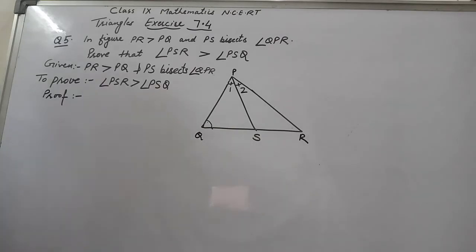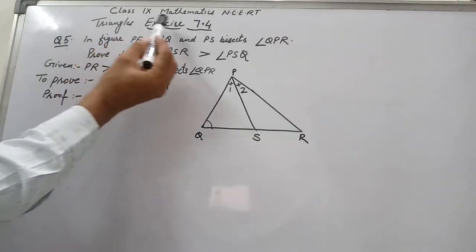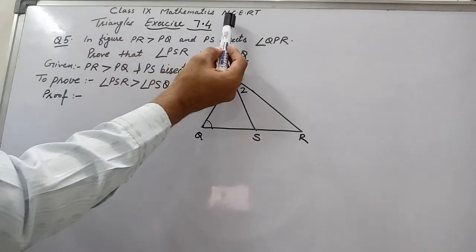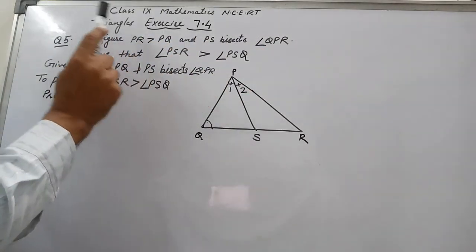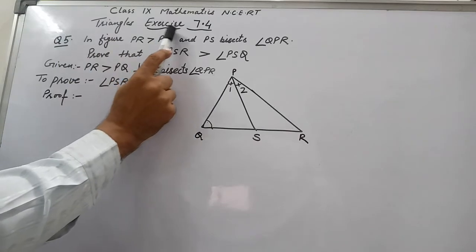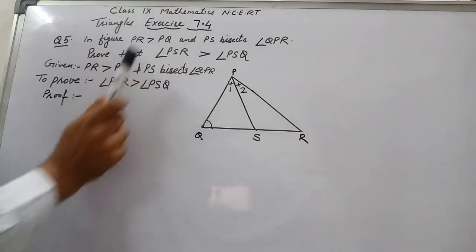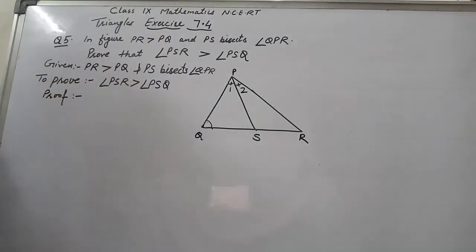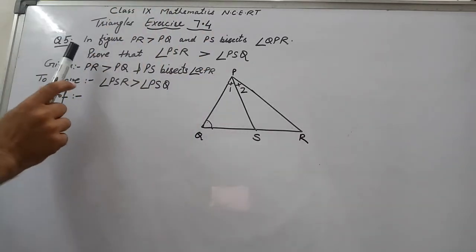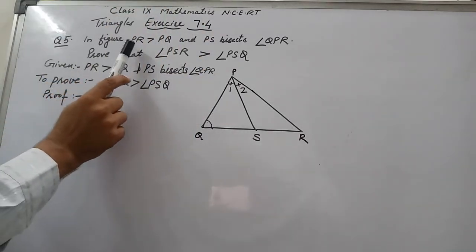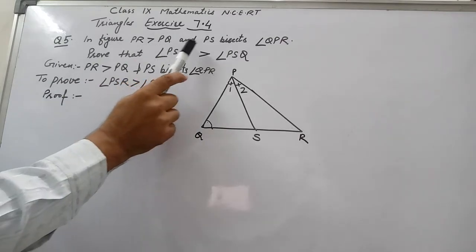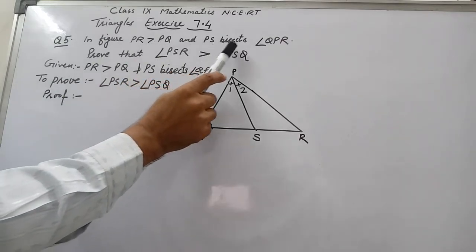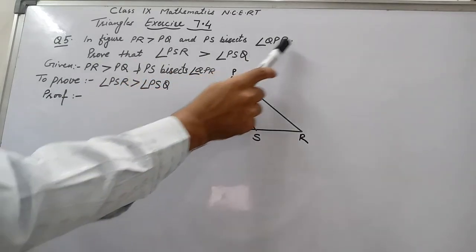Let's start with our work. This is Class 9 Mathematics NCERT book, Triangles chapter, Exercise 7.4, Question 5. In the figure, PR is greater than PQ and PS bisects angle QPR.